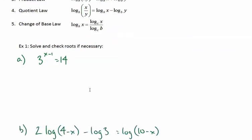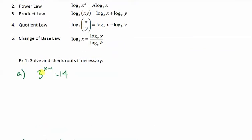Let's look at the first example. 3 exponent x minus 1 equals 14. Now, just a mental check. Think about 3 squared. 3 squared is 9. Think about 3 cubed. 3 cubed is 27. So, x minus 1 needs to be somewhere between 2 and 3, or x needs to be somewhere between 3 and 4, just as a reality check here.